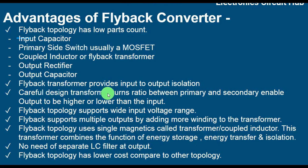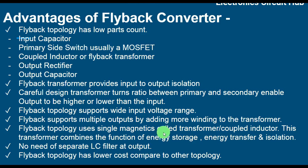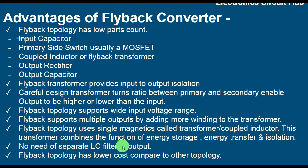Careful design of the flyback transformer turns ratio between primary and secondary enables a higher or lower output than the input. Flyback topology supports a wide input voltage range. It supports multiple outputs by adding more windings to the transformer. Flyback topology uses single magnetics — the transformer or coupled inductor — which combines the functions of energy storage, energy transfer, and isolation. There is no need for a separate LC filter at the output. Flyback topology also has lower cost compared to other topologies, because it has a lower parts count.